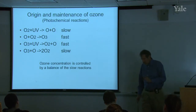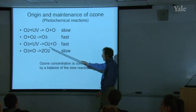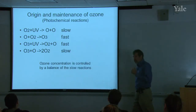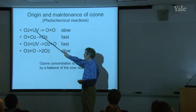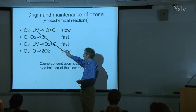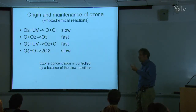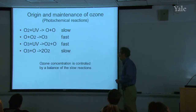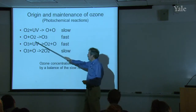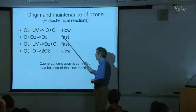So why do we have ozone in the stratosphere? We know we have a lot of O₂ — it's the second most common molecule. Occasionally a high-energy ultraviolet photon from the sun will dissociate that diatomic oxygen into two oxygen atoms. That doesn't happen very often, but when you have free oxygen atoms, they quickly combine with an O₂ molecule to form ozone. That's a fast reaction.